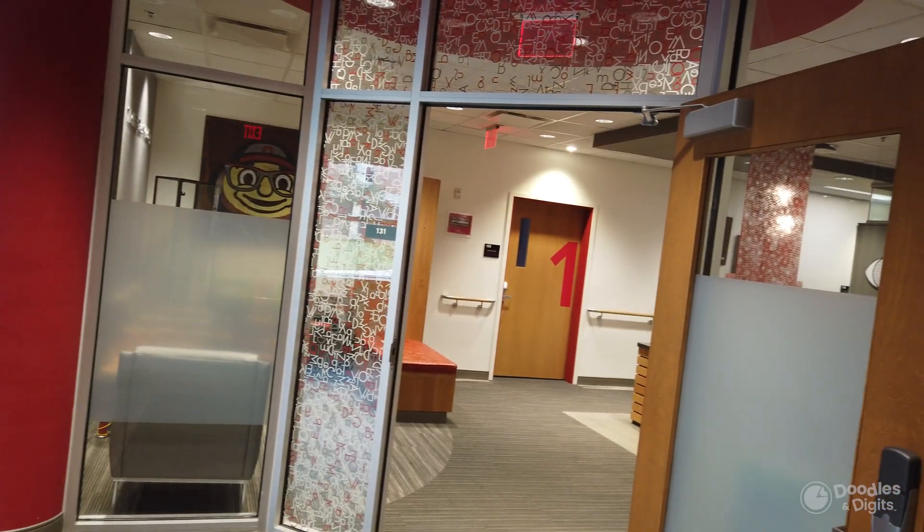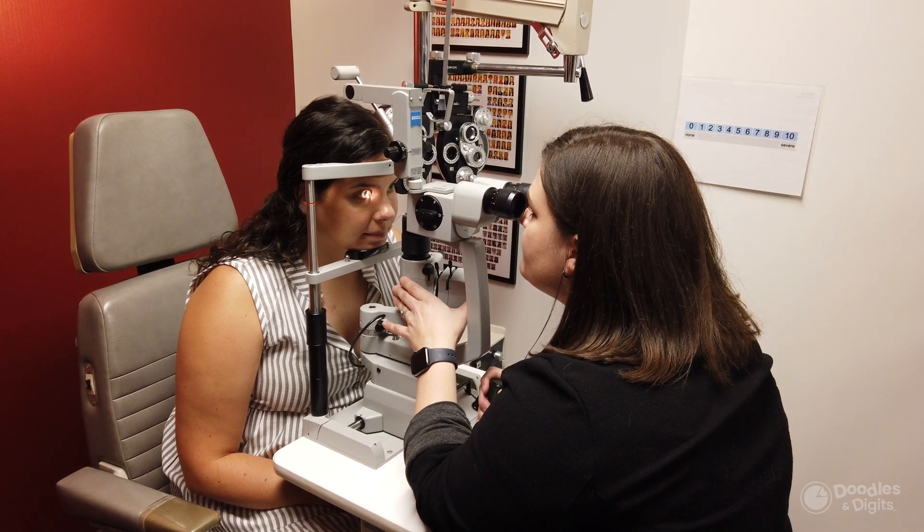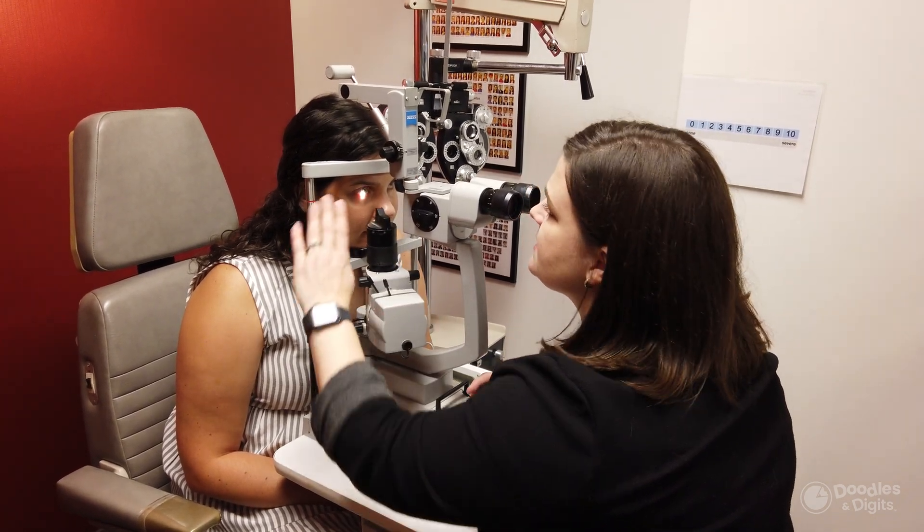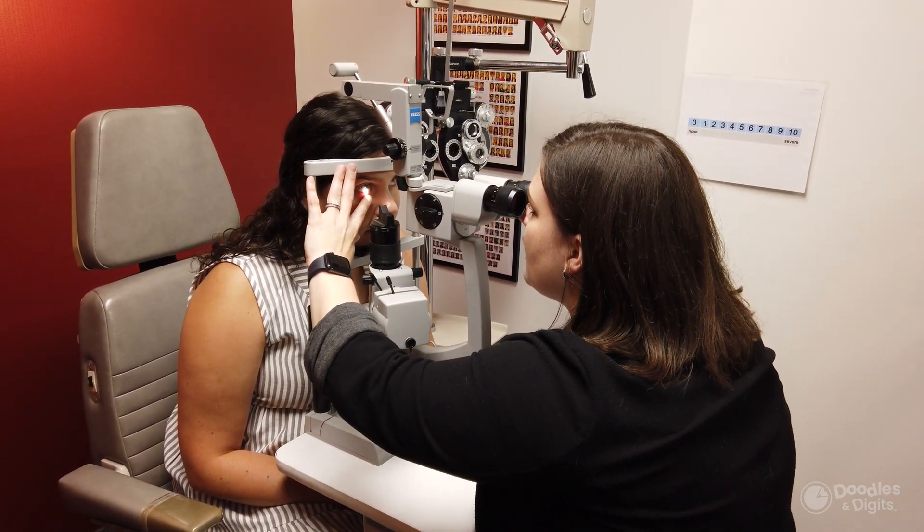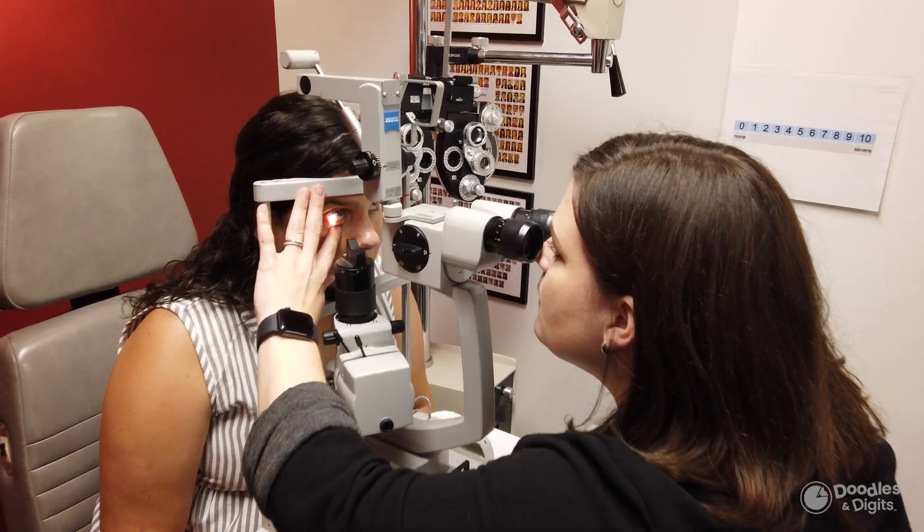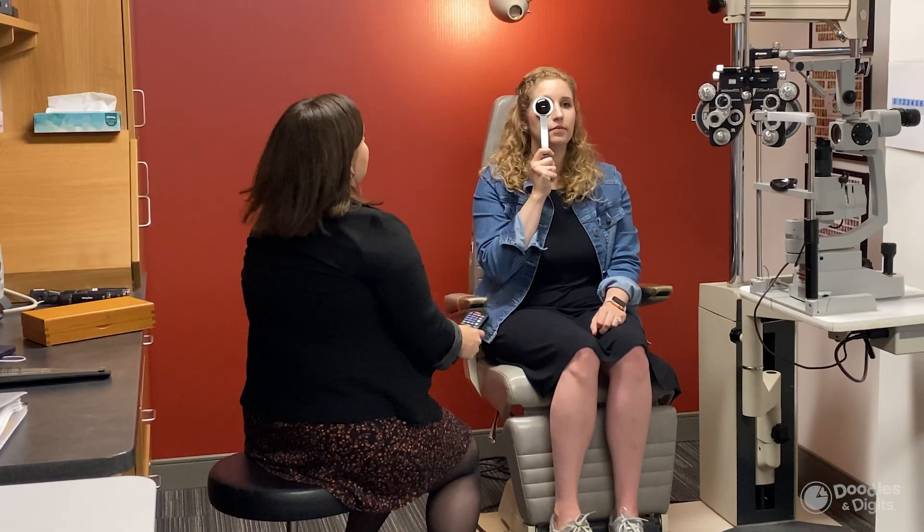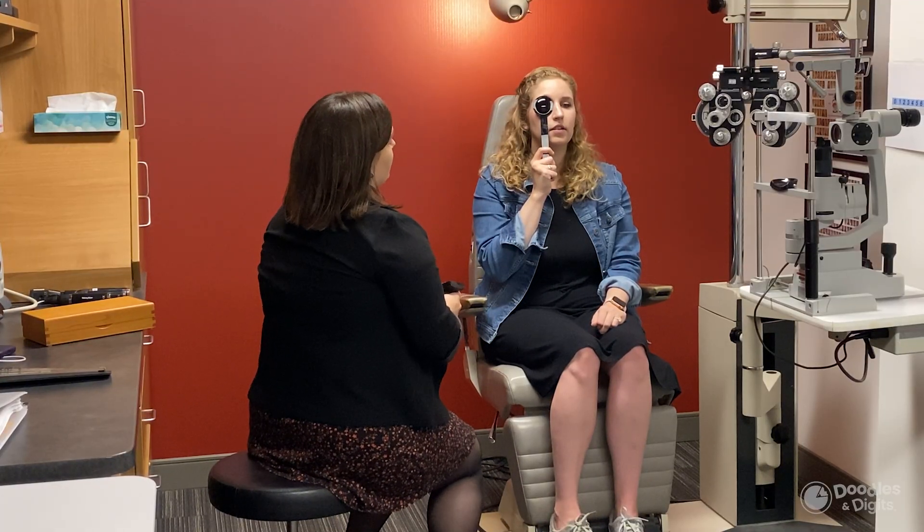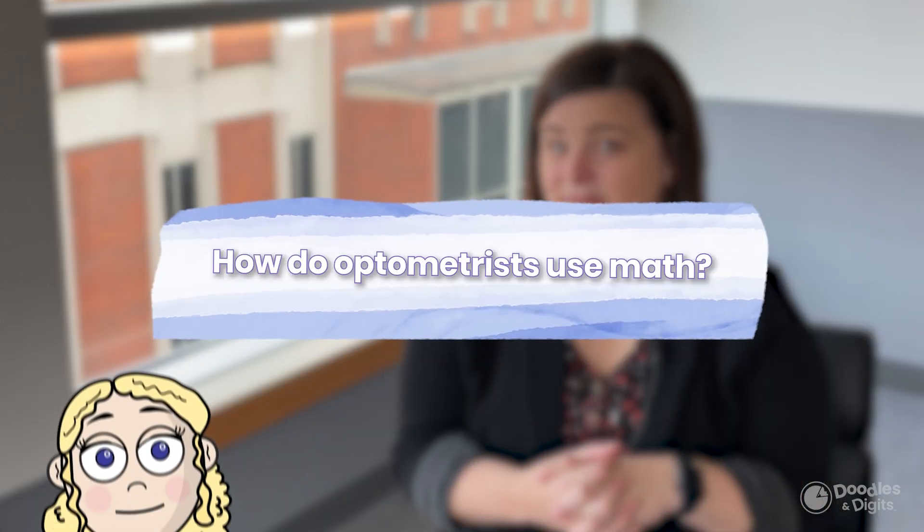An optometrist is an eye doctor who prescribes glasses and contacts which help you see the world better, but optometrists do a little bit more than that. They can help manage and diagnose problems with the eyes and visual system. Sometimes the eyes don't like to work together or focus as well as they should, which can affect kids in the classroom. We can do things to help manage and treat those conditions to help them succeed visually.